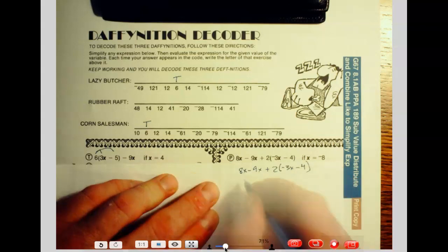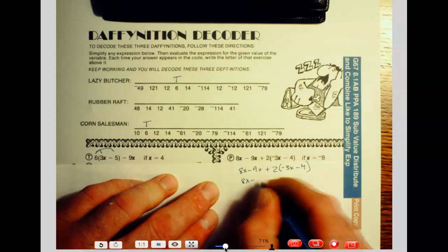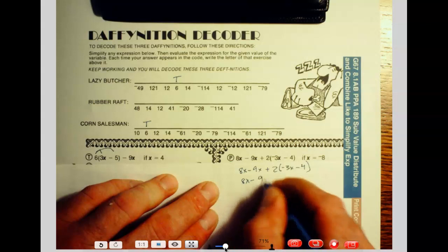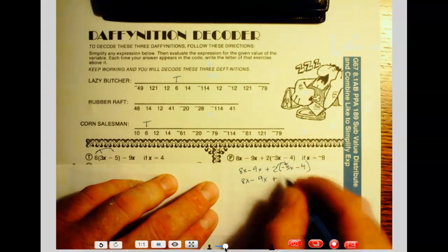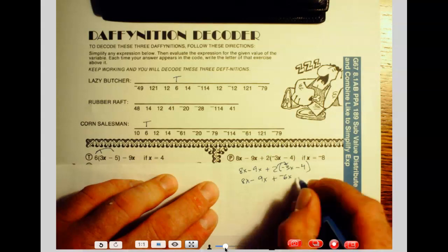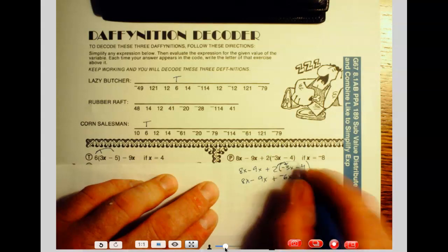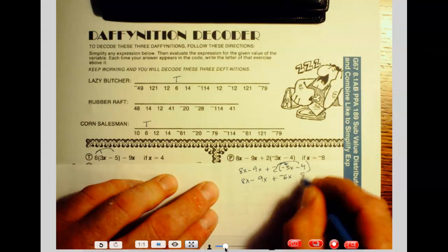So let's just rewrite this. 8x minus 9x plus it's distributed. This is going to be 2 times 3 is going to be 6x, it's going to be negative 6x. And then we've got 2 times 4, that's going to be 8 and it's a minus 8.